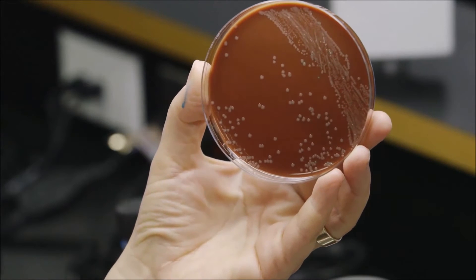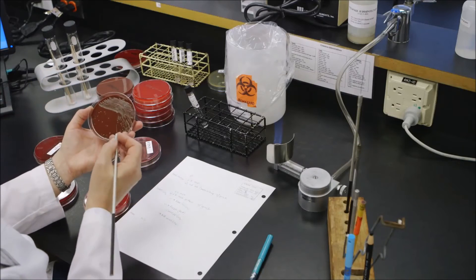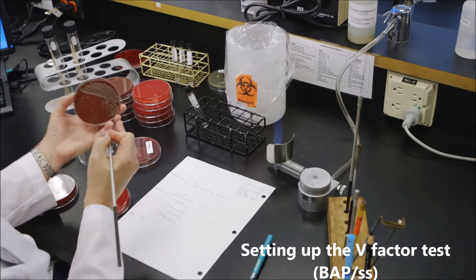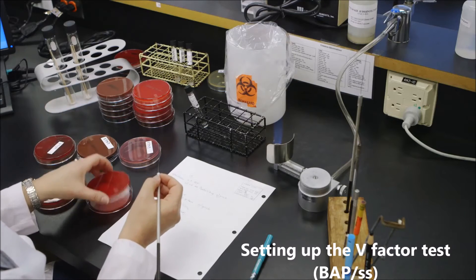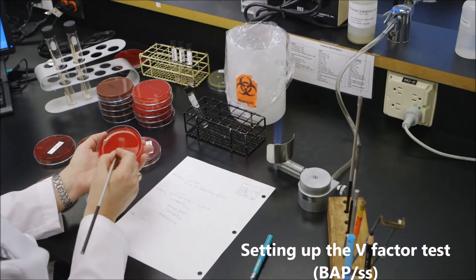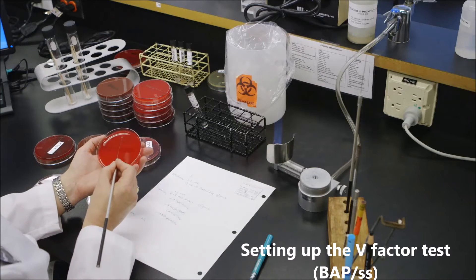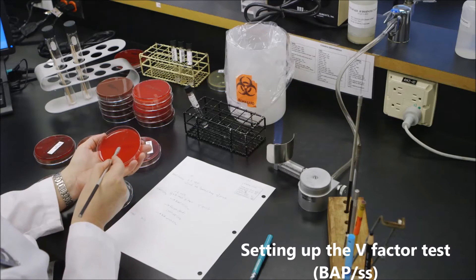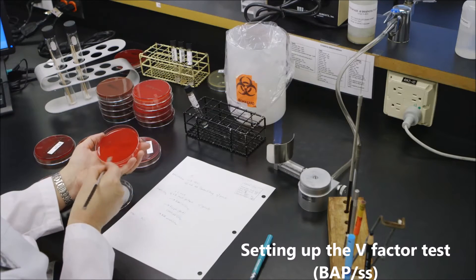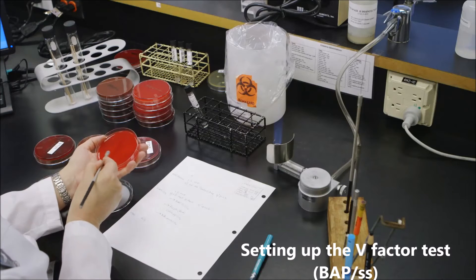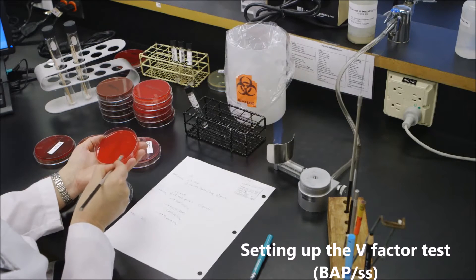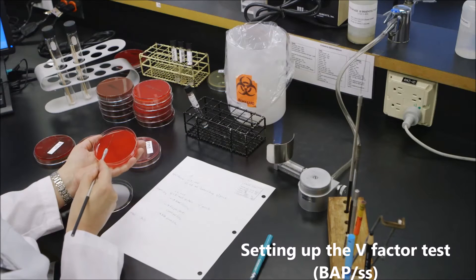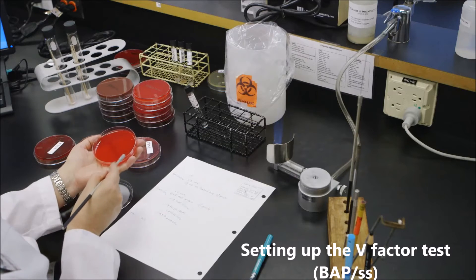And I start with touching the colony that I will have circled, just barely touching it, delivering it to the plate, and then streaking in four directions for isolation. It's important not to over-inoculate this plate, so I'm going to flip my loop to do quadrants three and four.